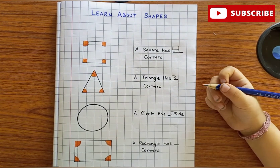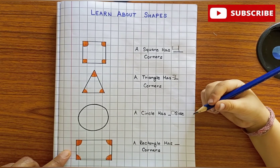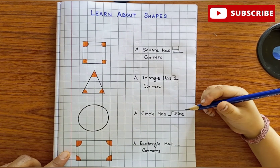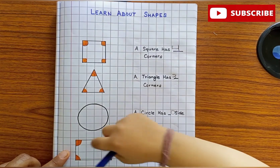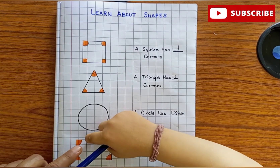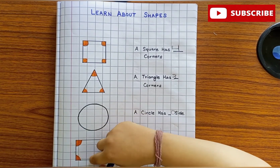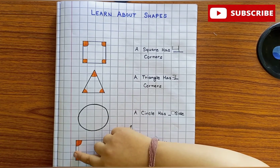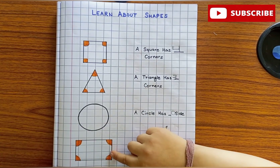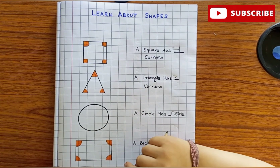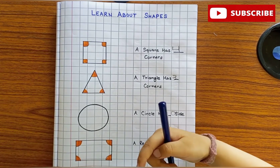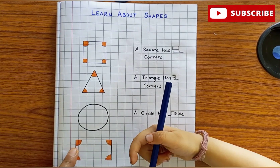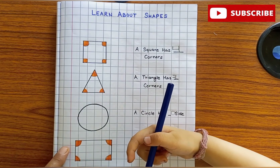Which shape is it? Rectangle. Rectangle. How do you draw a rectangle? Sleeping line, sleeping line, and standing line, standing line. Okay.